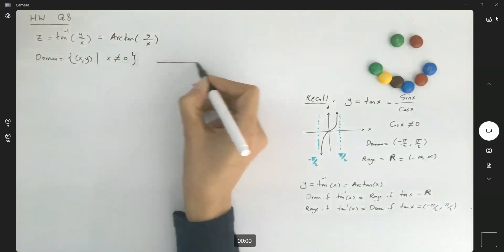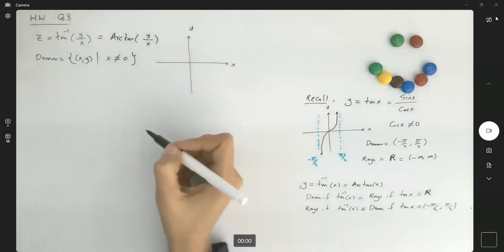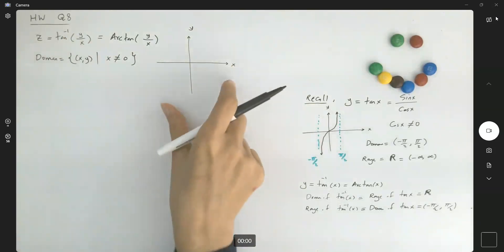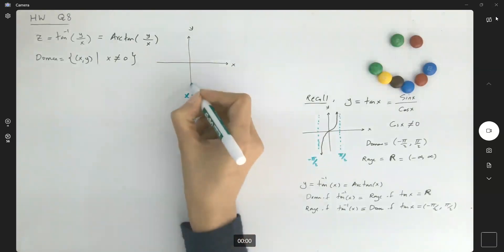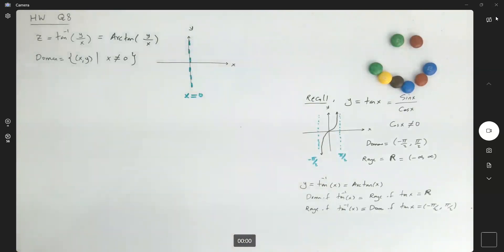If you want to take a look at the graph of this function, the domain is in the x-y plane. We're going to use a 3D software to visualize this. But for the domain, you have to exclude line x equal to zero, which is your y-axis. You're going to exclude the y-axis.